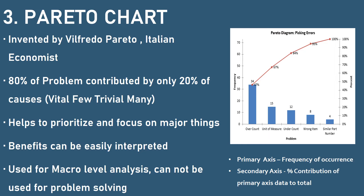The primary axis defines the frequency — the number of occurrences — and the secondary axis defines the contribution of each individual problem to the overall data.